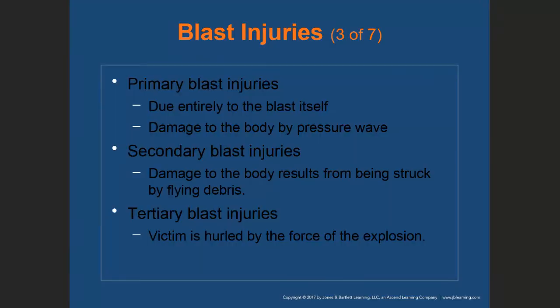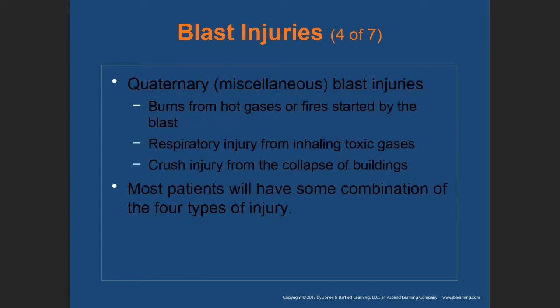Primary blast injuries are due entirely to the blast itself — damage occurs from the pressure wave. Secondary blast injuries result from being struck by flying debris or shrapnel. Tertiary blast injuries occur when the victim is hurled by the force of the explosion against an object — magnified if the explosion occurs inside a building. Quaternary or miscellaneous blast injuries include burns from hot gases or fires, respiratory injury from inhaling toxic gases, and crush injury from building collapse. Most patients will have some combination of all four types.